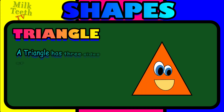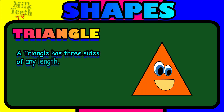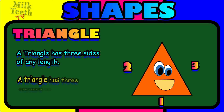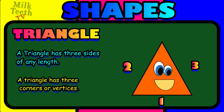A triangle has three sides of any length: one, two, three. A triangle has three corners or vertices: one, two and three.